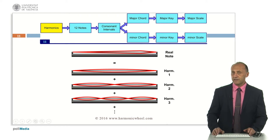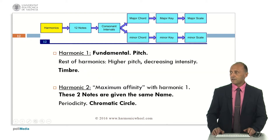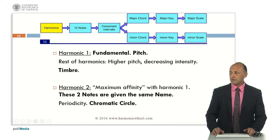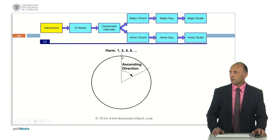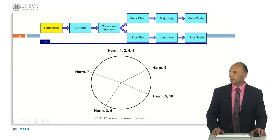As I explained in another presentation, every real note is equivalent to a sum of infinite harmonics. The first of them is called the fundamental and determines the pitch of the note; the rest of the harmonics determine the timbre. Harmonic 2 shows maximum affinity with harmonic 1, to the extent that in music we assign the same name to those two notes. That means that on a chromatic circle they are placed on the same point. Harmonics 1, 2, 4, 8 and so on are all doubles. Now we can represent the first 10 harmonics on the chromatic circle.